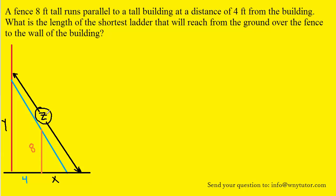Note that it is Z that we're trying to actually minimize, since the question asks what is the length of the shortest ladder that will reach from the ground over the fence to the wall of the building. So after drawing this picture what we need to do is develop an equation that relates all of our variables here, so let's go ahead and do that.